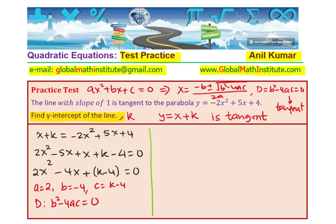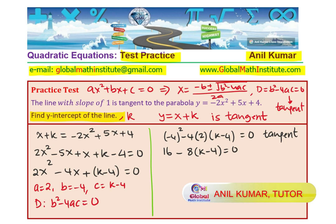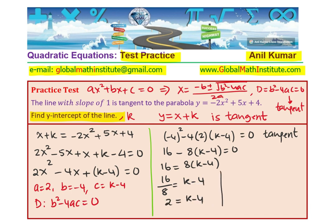So b squared is minus 4 squared, minus 4 times a which is 2, times c which is k minus 4, should equal 0 for tangency. So we have 16 minus 8(k minus 4) equals 0, which gives 16 equals 8(k minus 4). Dividing by 8, I get k minus 4 equals 2, so k equals 2 plus 4, which is 6.